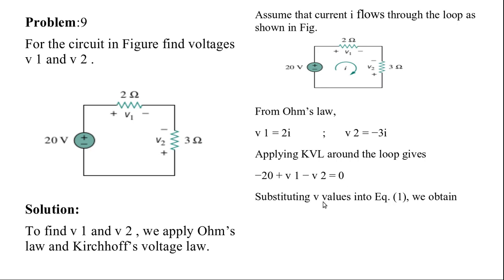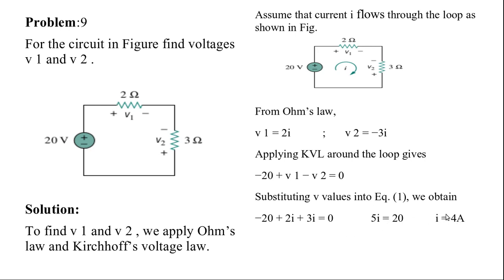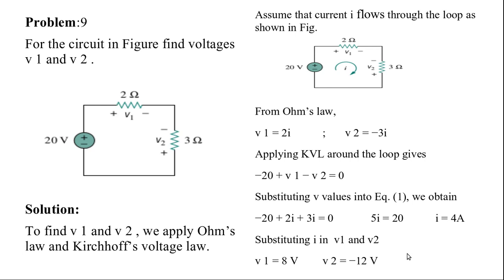Now substitute the V values into the equation: minus 20 plus 2i minus (minus 3i) equals zero, which gives minus 20 plus 2i plus 3i equals zero, so 5i equals 20, and i equals 4 amperes. You then substitute this i value into V1 and V2 to get the voltages. It's a very straightforward problem.